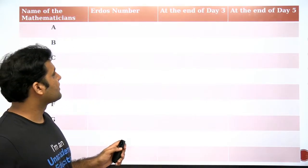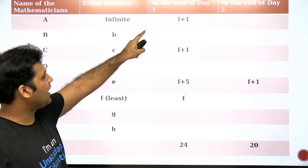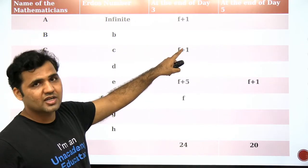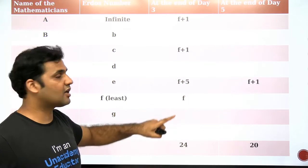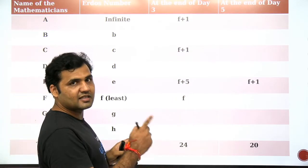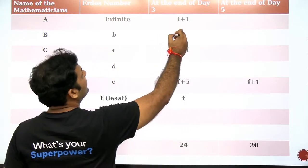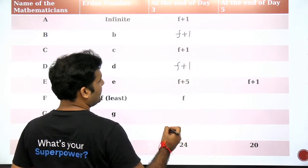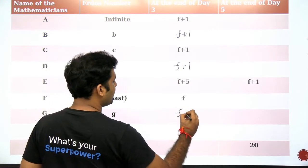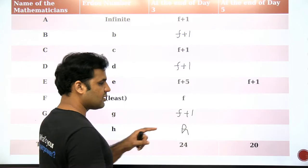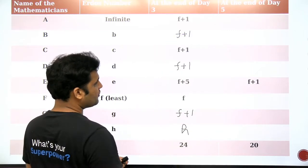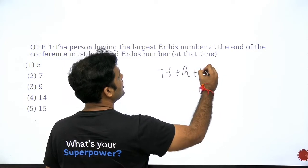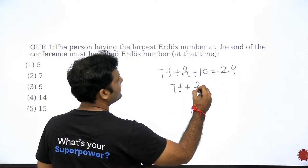So till now, we have discussed that the Erdos number of A after the co-authorship with F will get changed to F+1. C's Erdos number will also get changed to F+1 after the co-authorship with F. F is having the lowest Erdos number. While discussing the solution of the first question, we discussed that B's Erdos number will be F+1, D's Erdos number will be F+1. There will be 5 members with the Erdos number of F+1, and 1 member whose Erdos number will be the largest. The total of this value is 7 times of F, plus H, plus 10 equals 24, so 7F + H = 14.